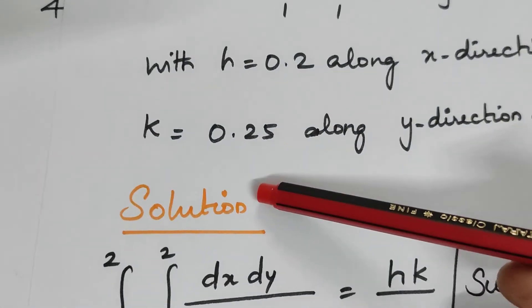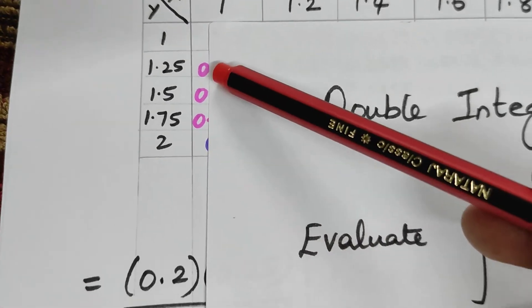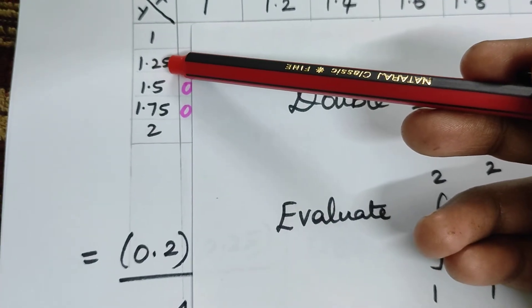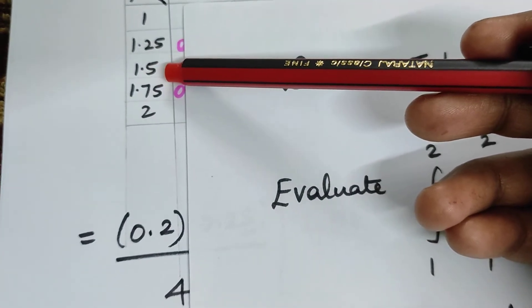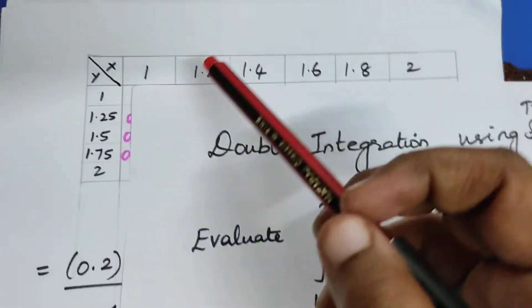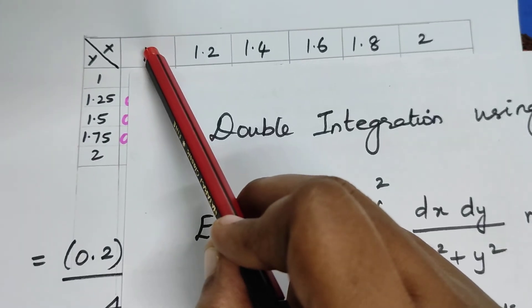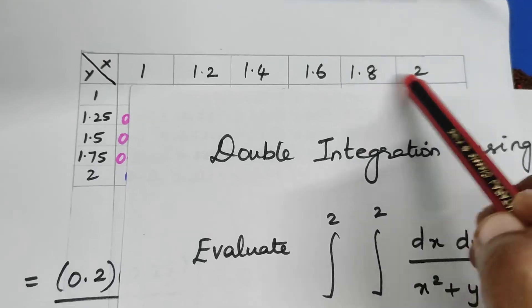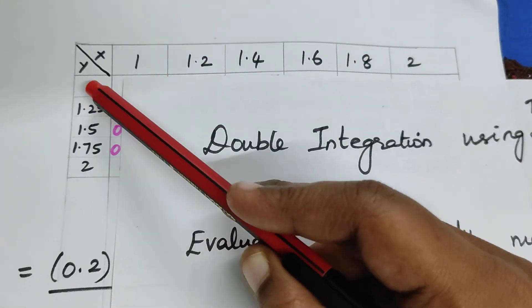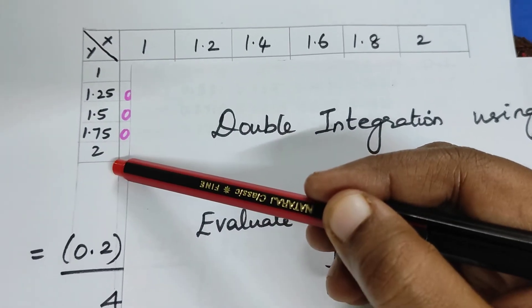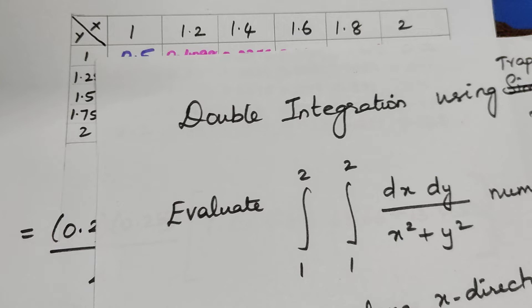What is your K value? K is 0.25, so automatically your Y value should vary in 0.25. The lower limit value is 1, incremented value is 1.25, again 1.5, again 1.75 and 2. The first value of X is the lower limit of the integral and the last value of X is the upper limit. Same way for Y. How will I tabulate this particular table?